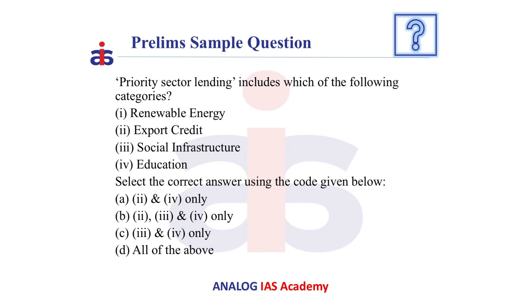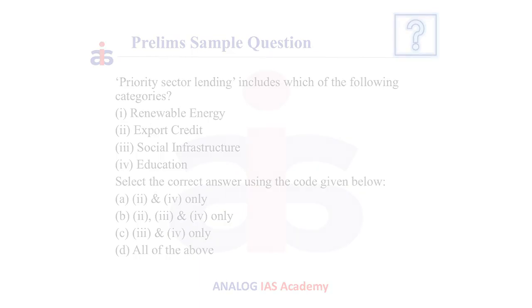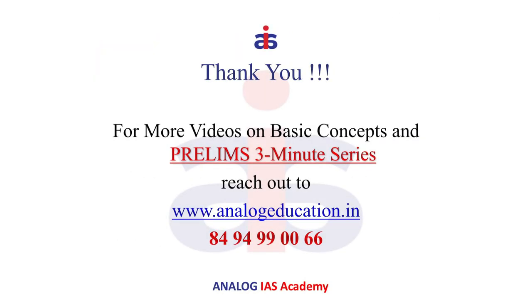Now let us see a question based on this. Priority sector lending includes which of the following categories? Renewable energy, export credit, social infrastructure, education. The answer is all of the above. Thank you.